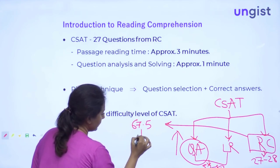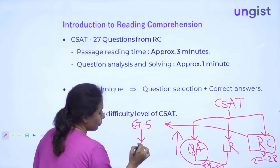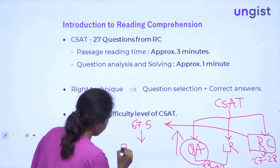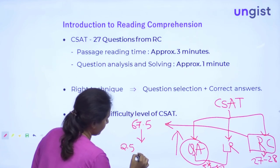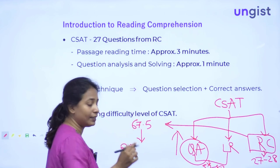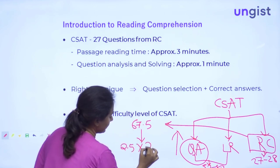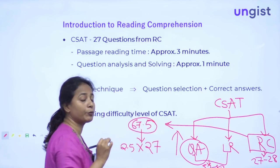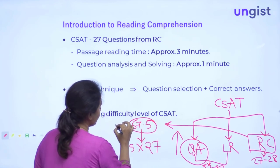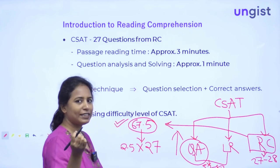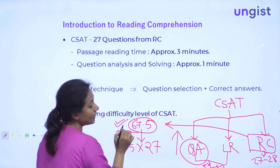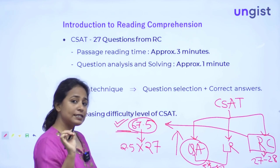This section can give you around 67.5 marks if you solve all the questions. Because here, one question answered correctly is worth 2.5 marks, multiplied by 27, giving you 67.5 marks. We need 66.66 to qualify — so solving all RC questions puts you above the CSAT cutoff.